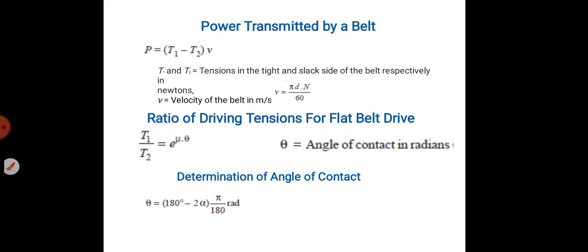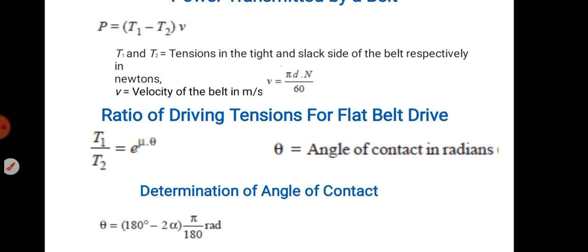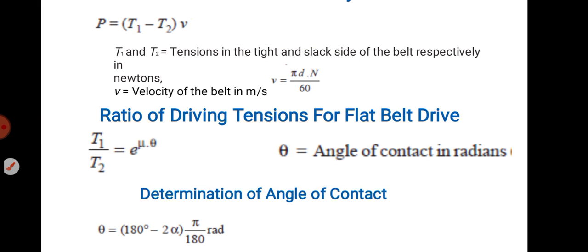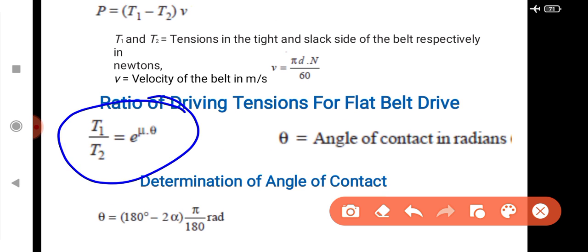Power transmitted by belt: P equals (T1 minus T2) into V, where V is the velocity of the belt and T1 is the tight side tension, T2 is the slack side tension. The velocity formula is pi × d × n divided by 60. The ratio of tensions: T1 by T2 equals e to the power (μθ). We can use this equation to solve the formula.